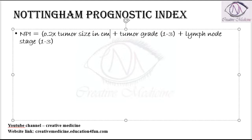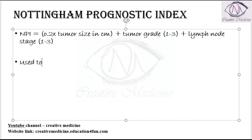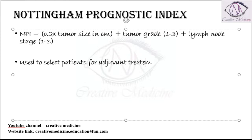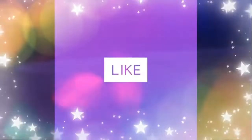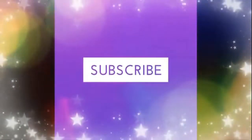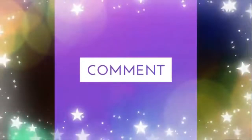So this is Nottingham's Prognostic Index: 0.2 × tumor size + tumor grade + lymph node stage. This index is used to select patients for adjuvant therapy. Thank you for watching.